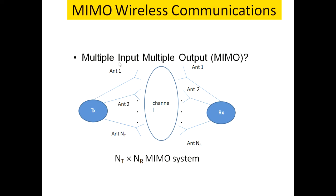In MIMO, we replace the single antenna with a number of antennas represented by NT, where NT is the total number of antennas at the transmitter. N is the total number and T represents the transmitter.